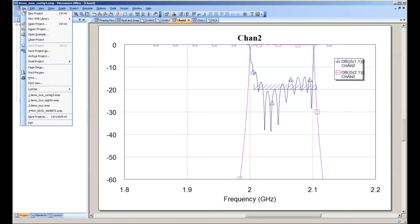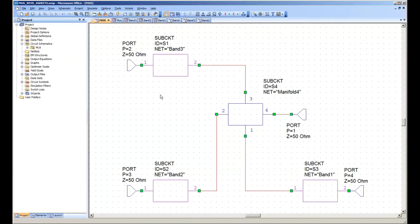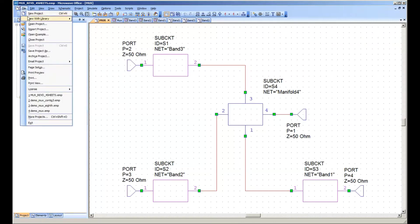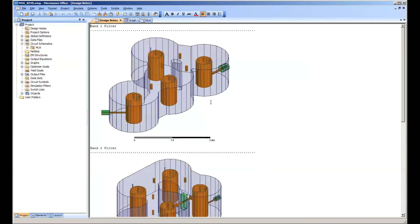I've got another example here of a triplexer. Let me open a different file. Let me open this file first because it's got some pictures in it.